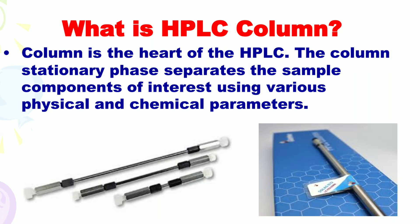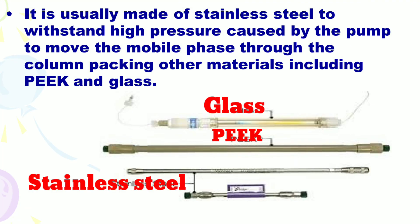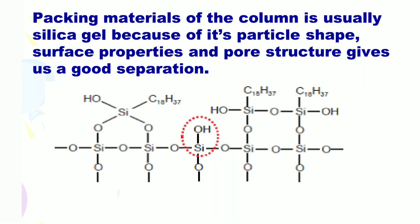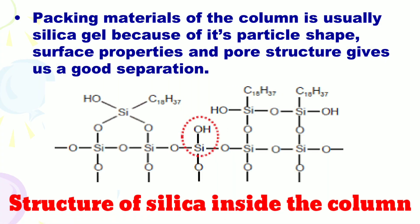First of all, we should know what an HPLC column is. The column is the heart of the HPLC. The column's stationary phase separates the sample components of interest using various physical and chemical parameters. It is usually made of stainless steel to withstand high pressure caused by the pump to move the mobile phase through the column packing. Other materials include PEEK and glass. The small particles inside the column called packing cause the high back pressure at normal flow rates. Packing material of the column is usually silica gel because of its particle shape, surface properties, and pore structure, which gives good separation.